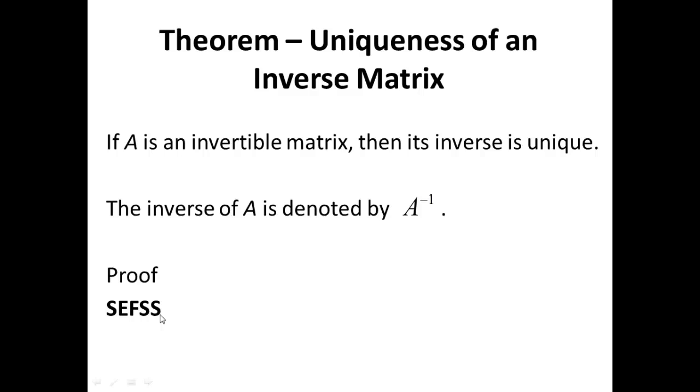But I'll give you a hint. Now since A is Invertible, it must have at least one Inverse. So let B be an inverse of A. What does that mean? A times B equals B times A equals I.